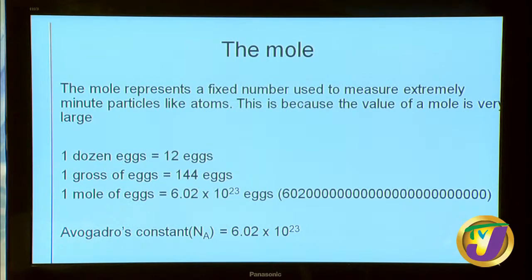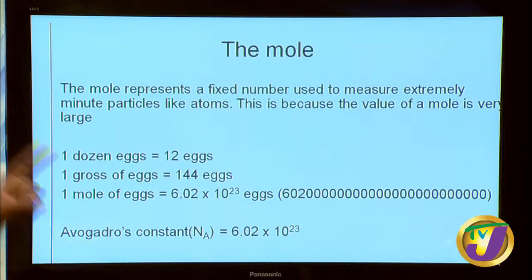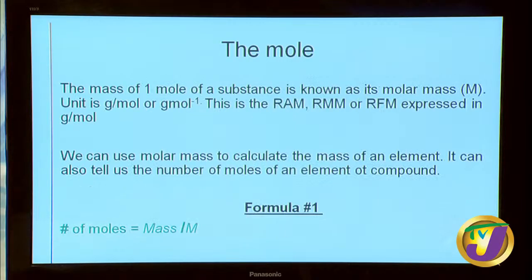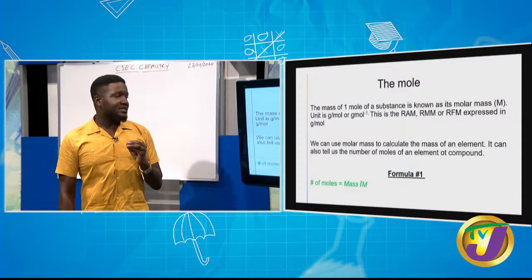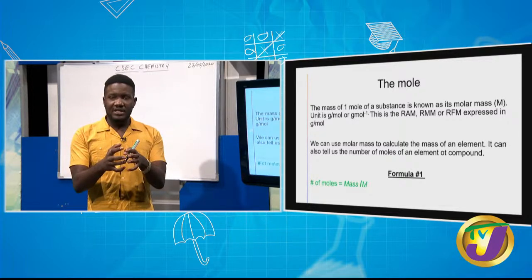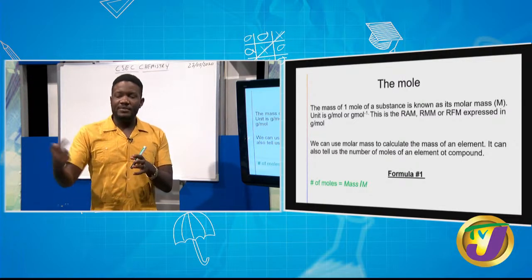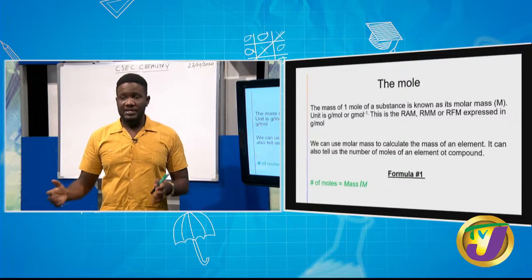The number 6.02 × 10²³ is known as Avogadro's constant — a constant that does not change in our formulas. The mass of one mole of a substance is known as its molar mass, and the unit is grams per mole. Once you find the RAM, RFM, or RMM, all you do is express that in grams per mole. When you say grams per mole, you are saying that amount of substance contains 6.02 × 10²³ atoms, molecules, or formula units.